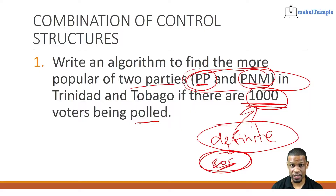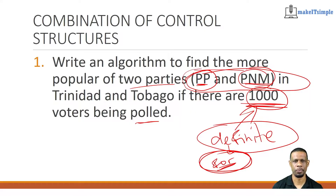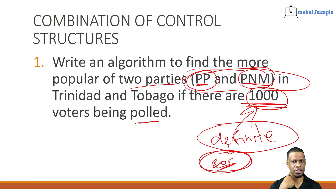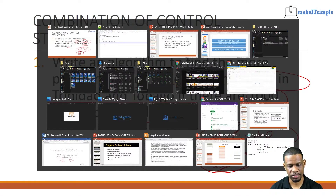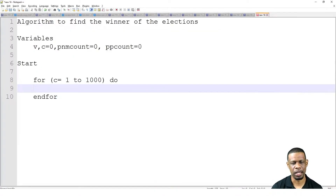We as humans could count if we want, but it's much easier to get a computer to count because computers are natural counting machines. Whereas humans, we have other things to do — like aimlessly scroll through TikTok or whatever you want to do.